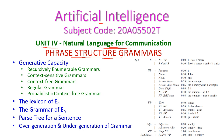In phrase structure grammar, we will see the generative capacity, and under this we will see the different grammars: recursively enumerable grammar, context sensitive grammar, context free grammar, regular grammar, and probabilistic context free grammar. After that, we will see the lexicon for language E0 and the grammar for language E0, and we will generate a parse tree for a sentence. After that, the over-generation and under-generation of a grammar. These are the topics we will see in today's class.